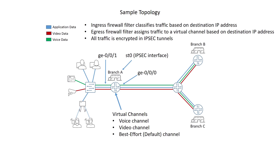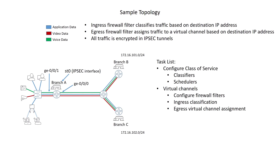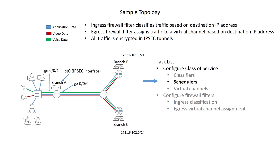An ingress firewall filter has already been created to classify traffic based on the destination address of each traffic stream. We'll configure the following in this example: classifiers and schedulers under class of service. The classifiers for this lab are based on an input firewall filter or multi-field classifier, which assigns a traffic stream to one of our two traffic classes — voice or video — depending on the destination address. We'll also configure schedulers, scheduler maps, virtual channels, and look at the egress virtual channel assignment done through a firewall filter.